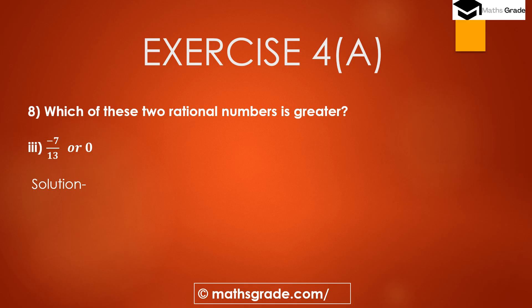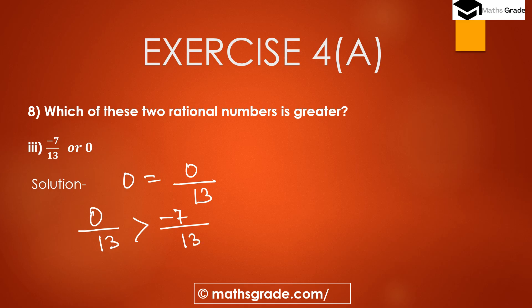Question number 8, part (c): which is greater — minus 7 divided by 13, or 0? This rational number minus 7/13 is negative because the numerator is negative. We can write 0 as 0 divided by 13. Since 0 is always greater than every negative integer, 0 divided by 13 is greater than minus 7 divided by 13. So 0 is the greater rational number.